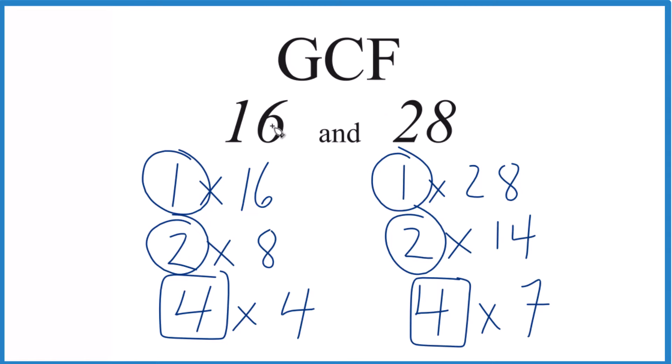So the GCF for 16 and 28, that is 4. There are other ways you could do this. You could use prime factorization. That would work. But for numbers of this size here, this works pretty well.